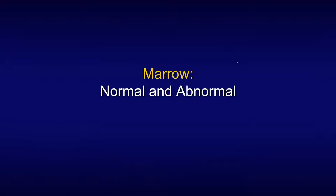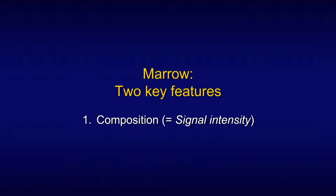So we try to achieve that goal today. In order to do that, we're going to review bone marrow — normal and abnormal. It has two key features: number one, its composition, which MRI translates into signal intensity — that's the bigger chunk of my talk for this morning — and the second parameter is distribution. So let's get started.